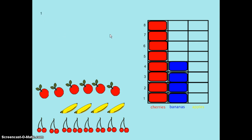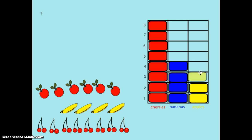Six students voted for apples, so I will color in six boxes on my bar graph. One, two, three, four, five, six.